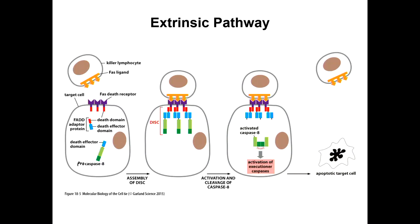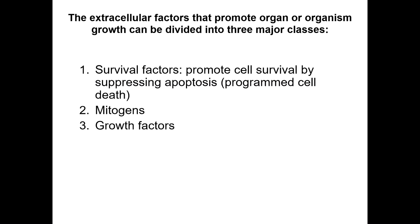This is where we left off last time. We finished talking about apoptosis — the intrinsic and the extrinsic pathway. I won't go through it again because you have that in your lecture capture. To finish off the few slides from last time: extracellular factors that promote organ or organism growth can be divided into three major classes, in the context of cell proliferation and cell death.